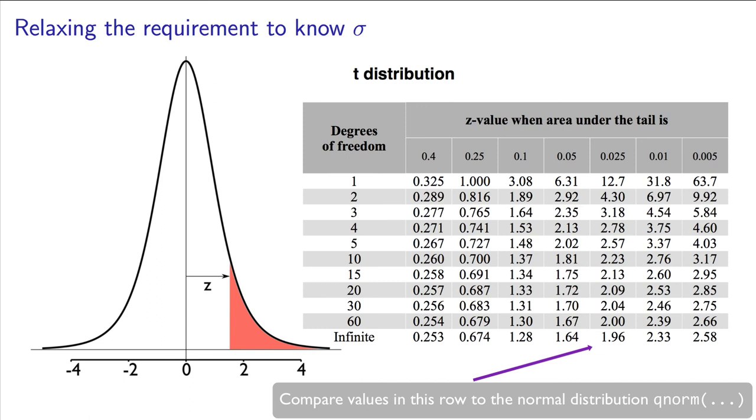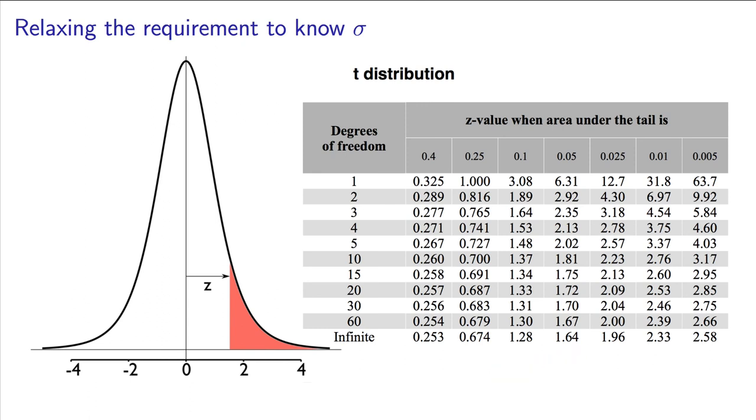Then you are back to the case where the z-value is normally distributed, instead of t-distributed. If that last part isn't clear to you, also watch the next video, where it is explained in a different way.